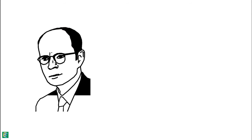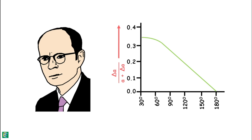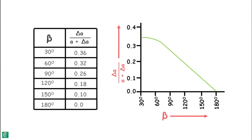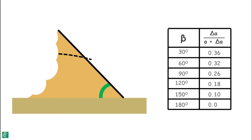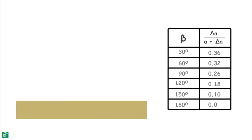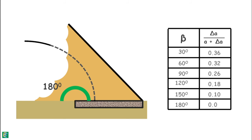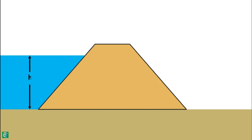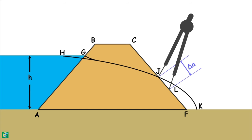Casagrande observed that delta a varies with the downstream slope angle beta, so he provided a chart for the exit correction delta a — the distance by which the basic parabola has to be shifted to locate where the actual seepage line cuts the discharge face. From the chart, the exit correction delta a is zero when beta is 180 degrees, consistent with the horizontal filter case. Once we obtain delta a, an arc of that length is cut on the downstream face and the base parabola curve is joined at this point to obtain the actual phreatic line.